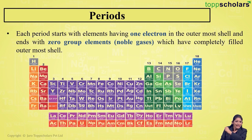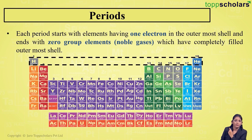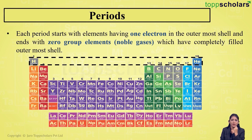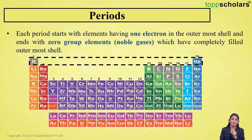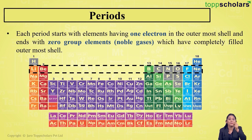If you look at the periodic table, you'll notice that each period starts with elements having one electron in the outermost shell and ends with zero group elements — that is, noble gases, which have a completely filled outermost shell. Period number one has two elements: hydrogen and helium. Hydrogen has one electron in its outermost shell, and helium has a completely filled outermost shell since it is an inert gas.